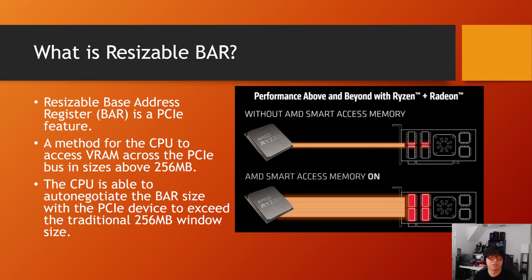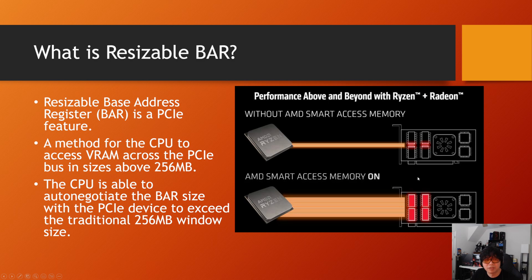When you go into the BIOS to turn this feature on, you first have to enable a setting called "Above 4G Decoding," which allows 64-bit addressing space above 4096 megabytes. It's similar to the transition from 32-bit to 64-bit operating systems back in the Windows XP/Vista/7 era — that upgrade enabled addressing memory above 4 gigabytes. Here it's the same concept, but specifically about the CPU addressing the VRAM rather than system RAM.